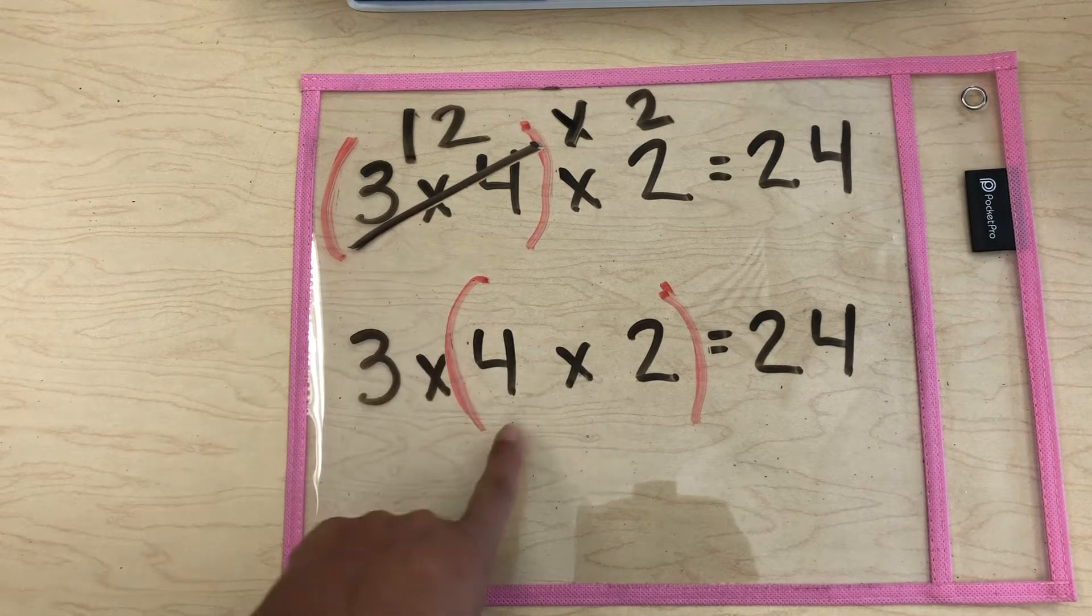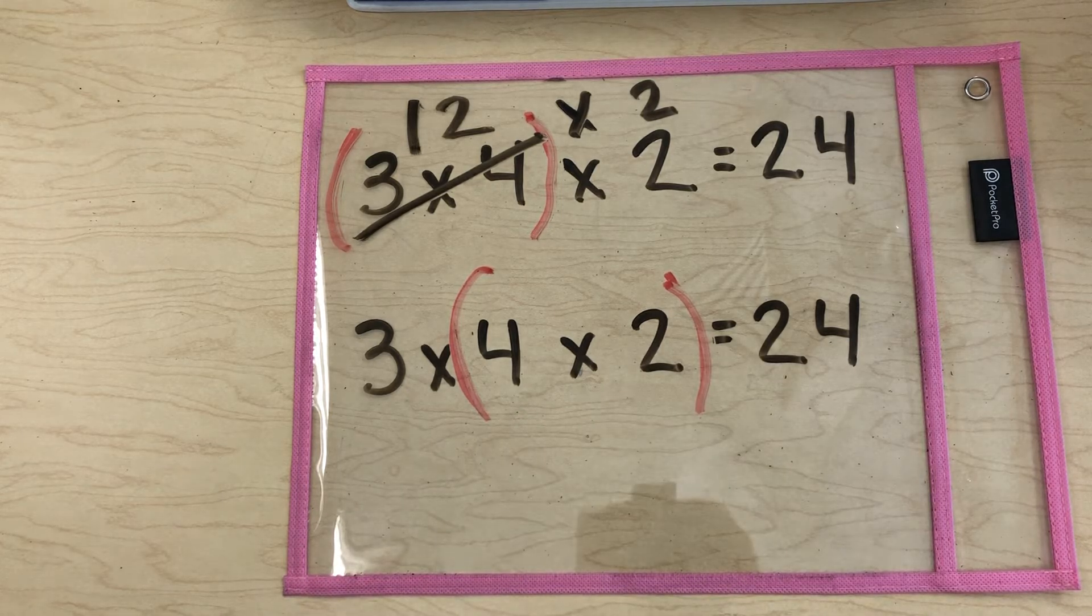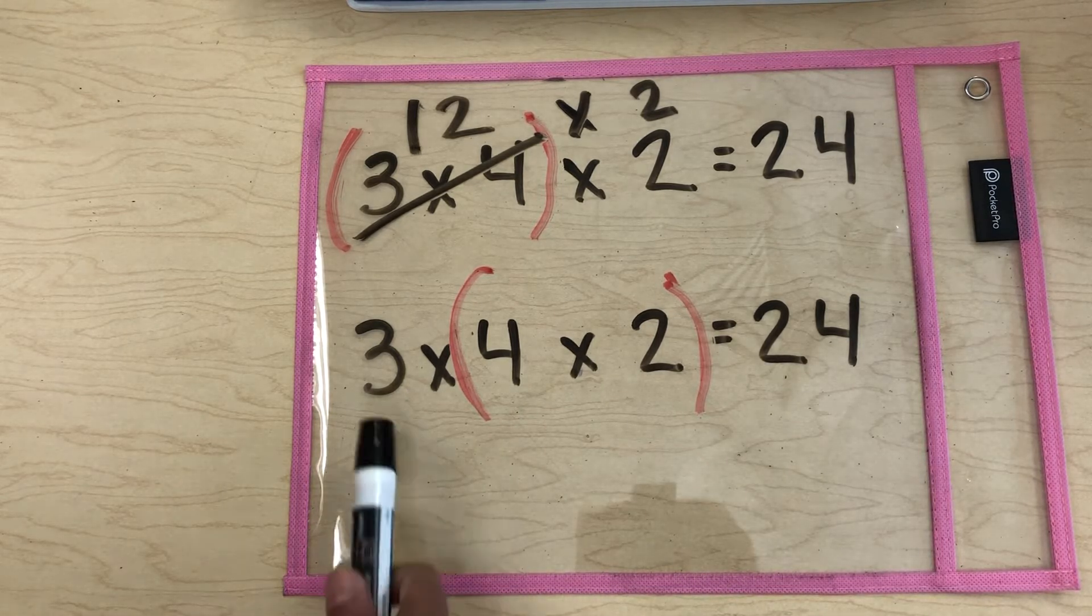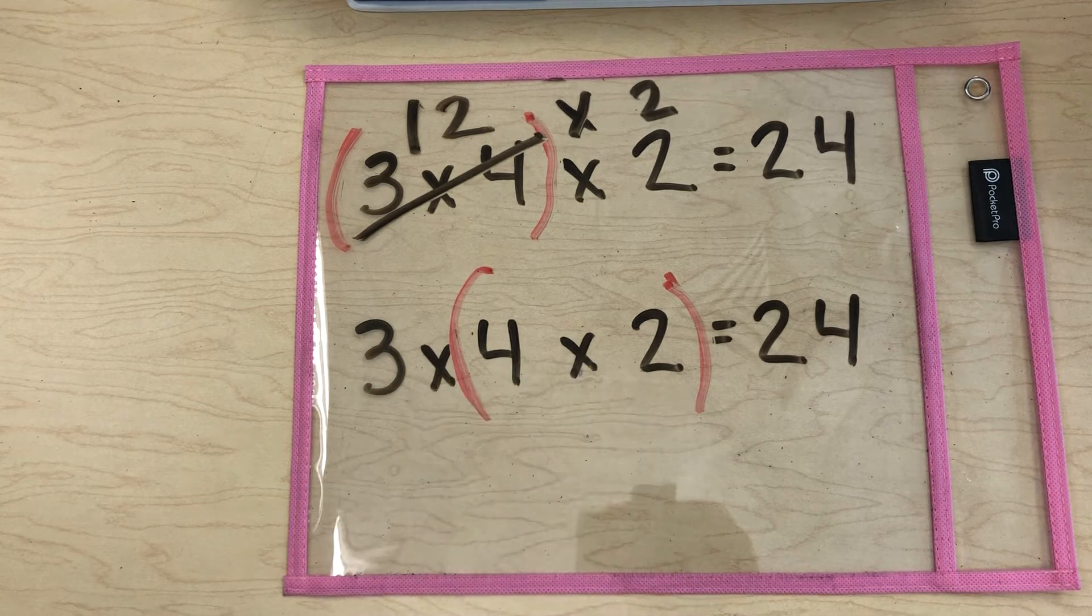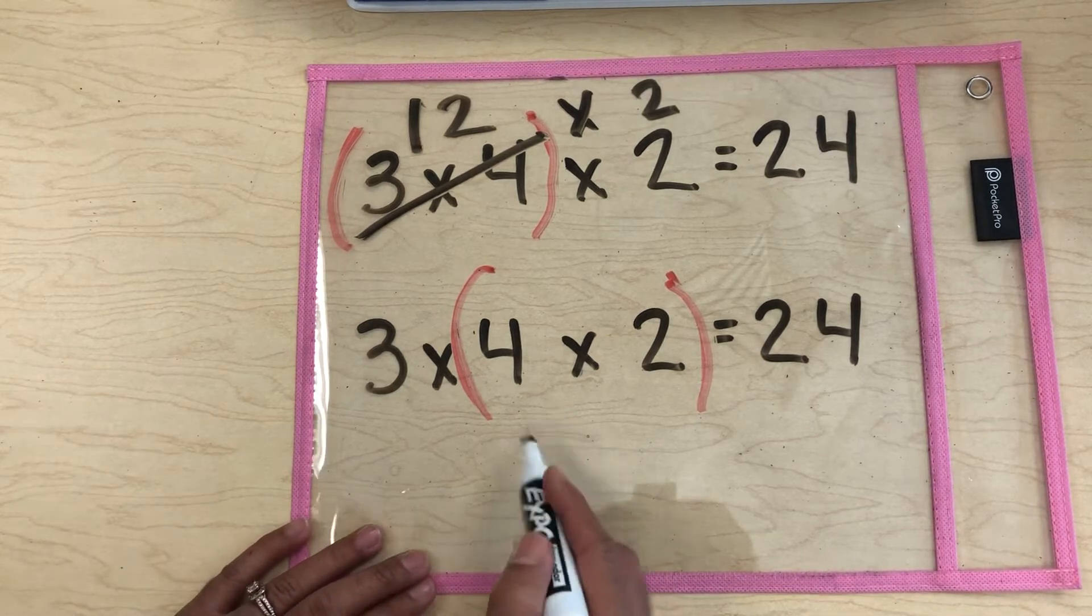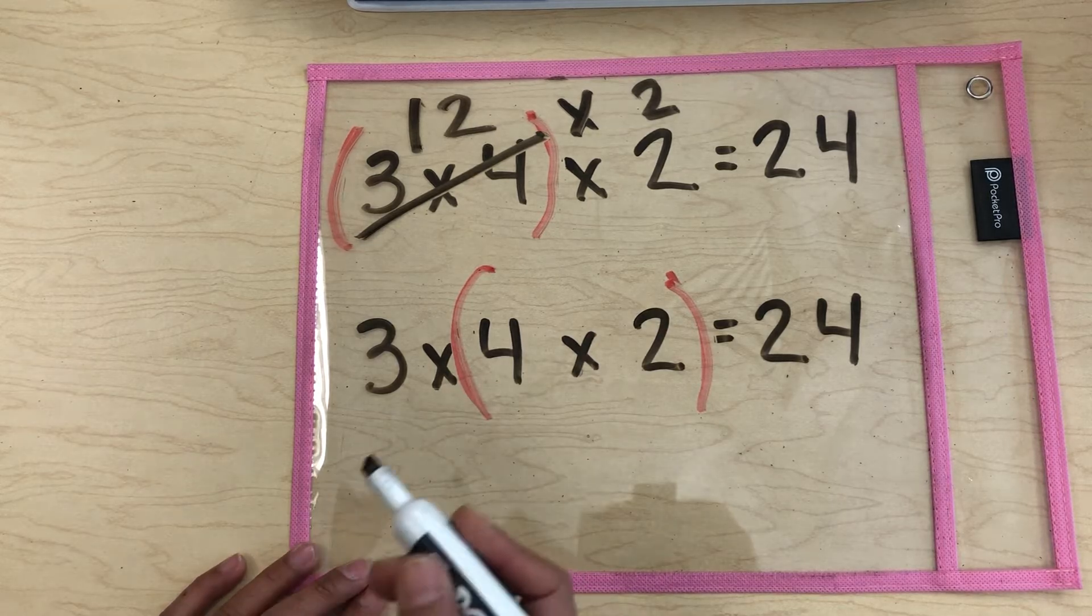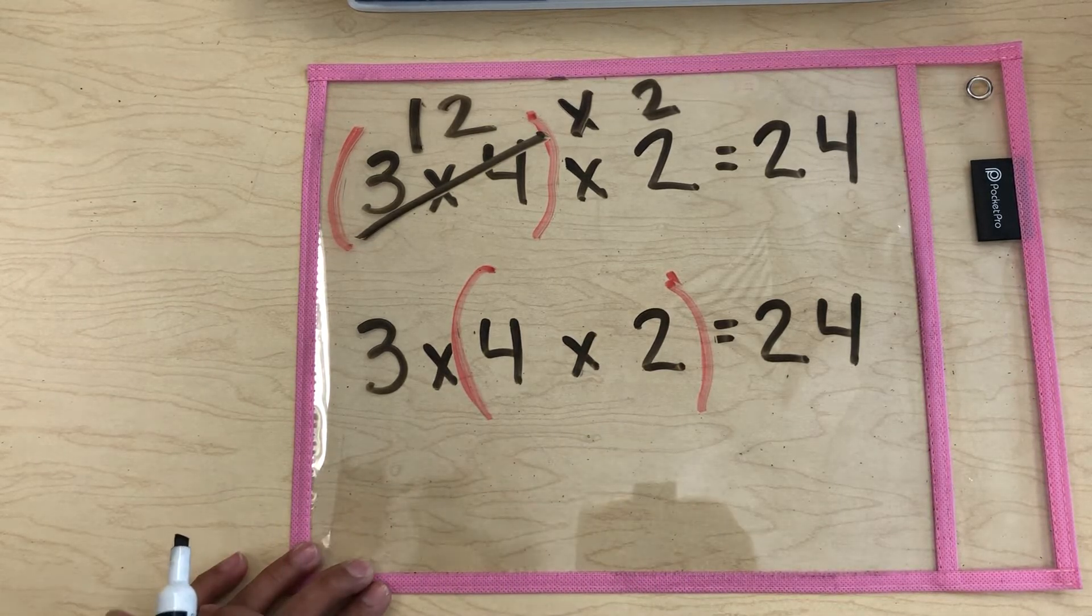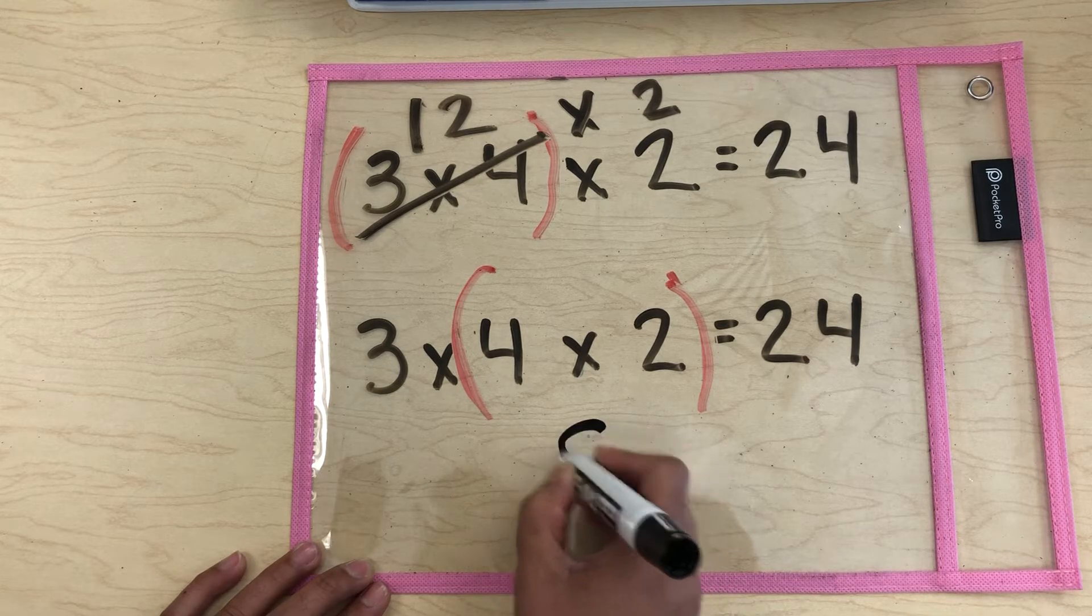Let's go and see if we, when we move those parentheses, do we still get the same answer? Let's check it out. So down here, are we going to do 3 times 4 first or 4 times 2 first? If you said 4 times 2, let's get rock and rolling. Remember, we have to do what's inside of the parentheses first when we use the associative property of multiplication. So 4 times 2 is equal to 8.